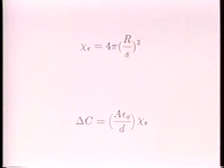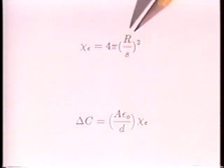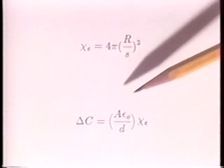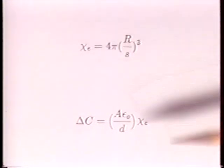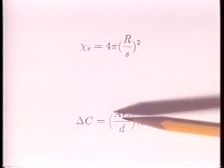With many widely spaced and therefore non-interacting spheres, the effective susceptibility and the changing capacitance caused by inserting the array between the plates are given by these expressions. Remember, R is the radius of a ping-pong ball, and S is the spacing between balls. A is the active area of an electrode, and D is the spacing. So this is the capacitance without the array.